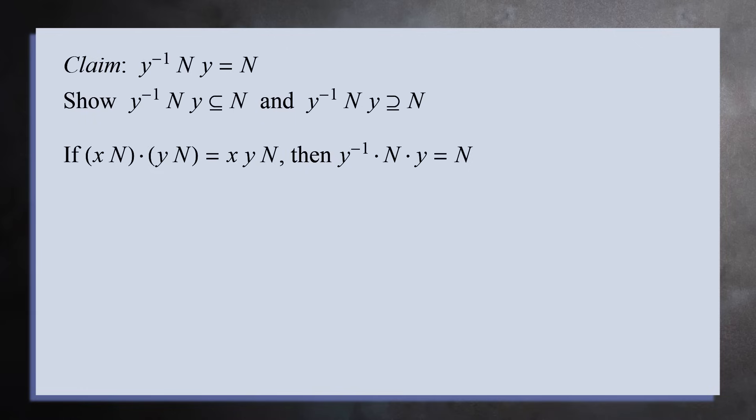Now that we have a group operation, we can check that the cosets form a group. The identity element is just a subgroup N, which you can also think of as a coset eN. We see this as the identity because eN times gN equals e times gN, which equals gN.